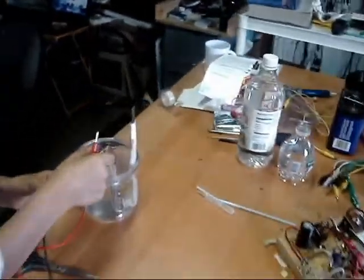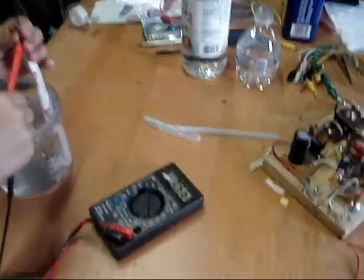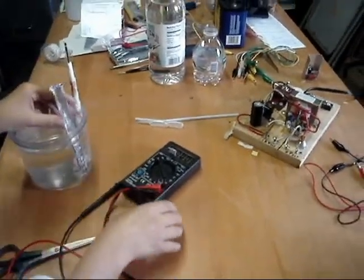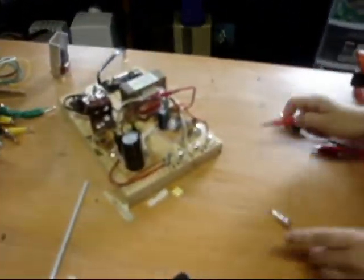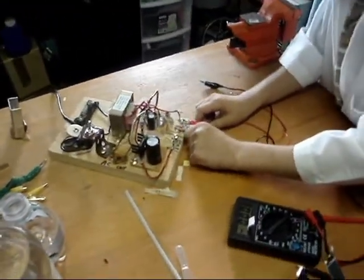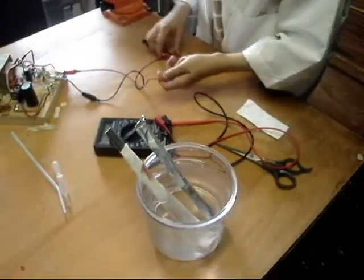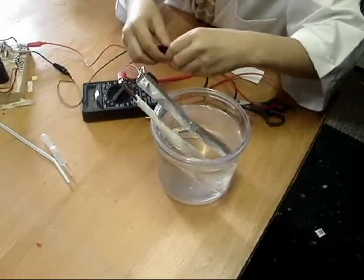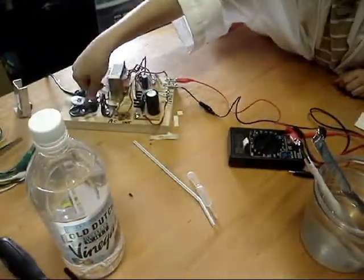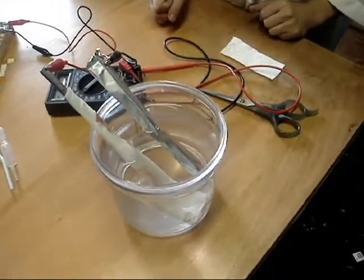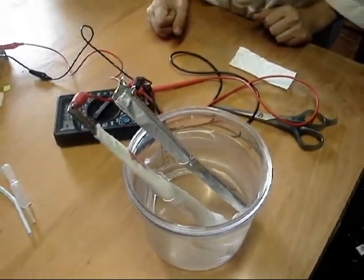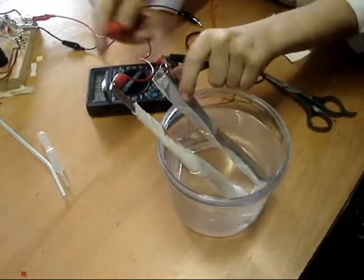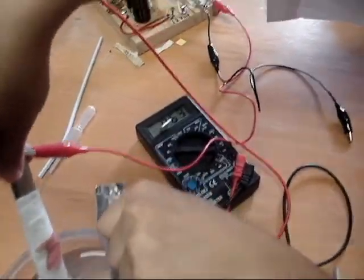My voltage before charging is at 0.56 volts. I quickly charge my battery. This increases my charge to 0.63 volts.